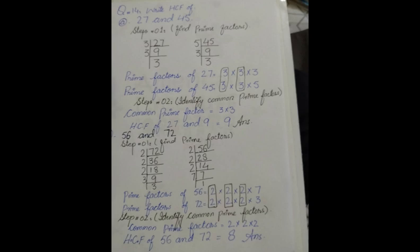The next one is 45. It's in the 5 table: 5 nines are 45. Then 9 is 3 threes. So factors of 27 are 3 into 3 into 3. Factors of 45 are 5 into 3 into 3. Now we find the common factors - we have two 3s in common. Multiply them: the HCF is 9.